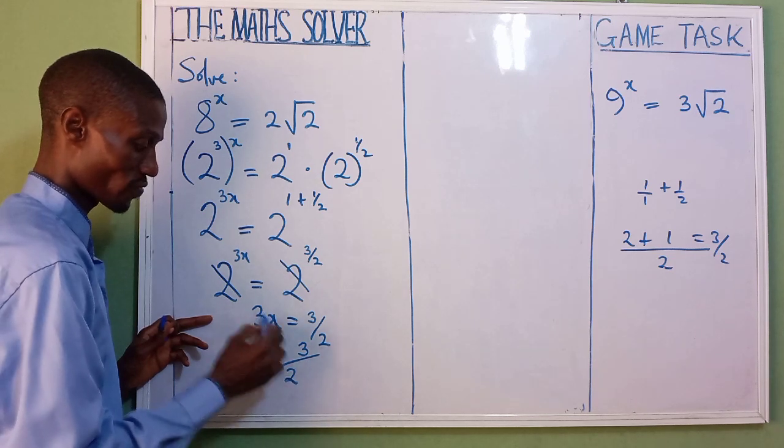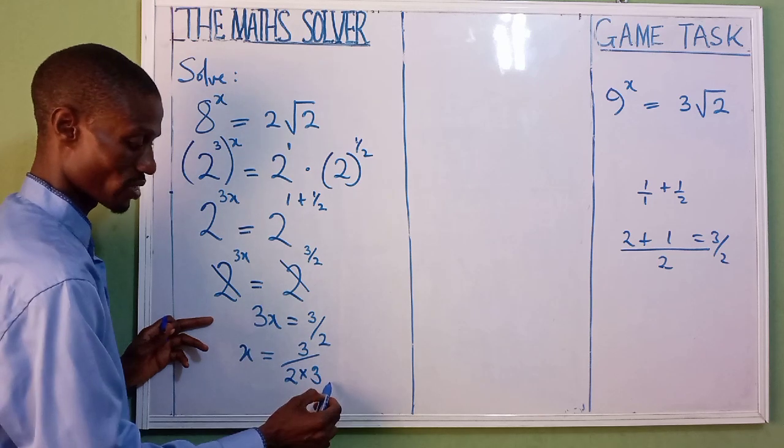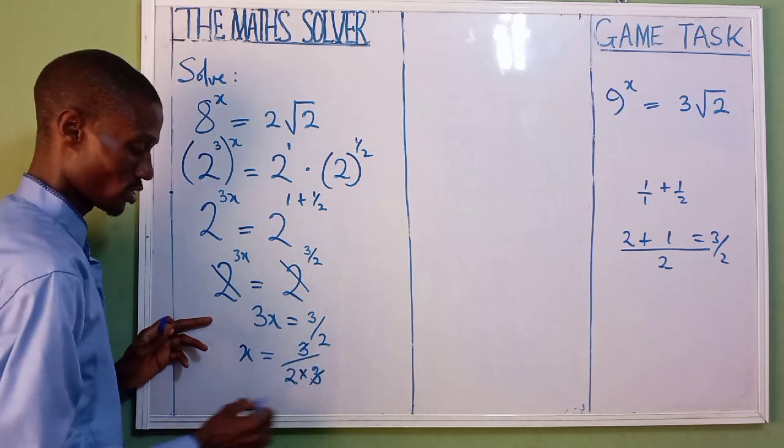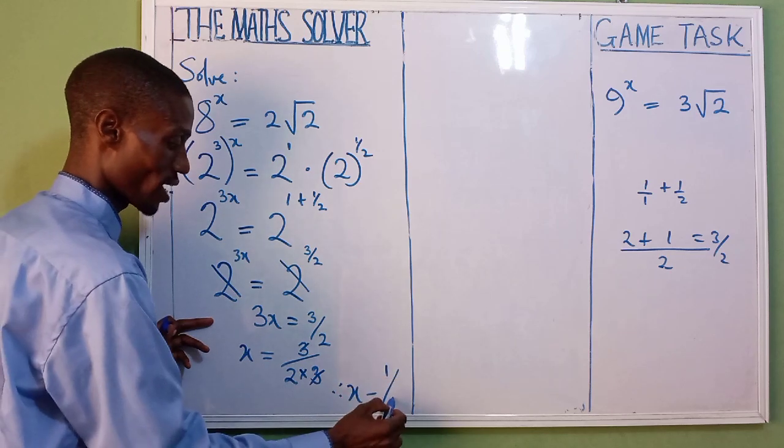x equal to 3 over 2. You also bring your 3 down. This 3, you bring it down. So 3 cancel 3. So it means our x equal to 1 over 2.